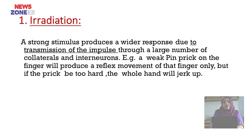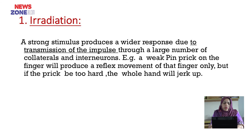What is irradiation? A strong stimulus produces a wider response due to transmission of impulse through a large number of collaterals and interneurons. For example, a weak pin prick on the finger will produce a reflex movement of that finger only, but if the prick is too hard, the whole hand will jerk up.